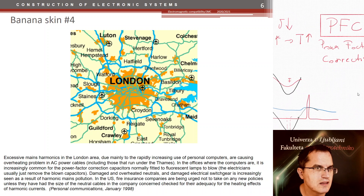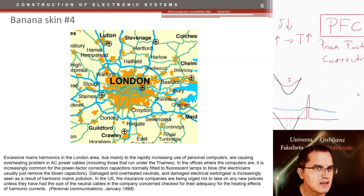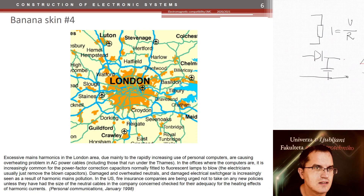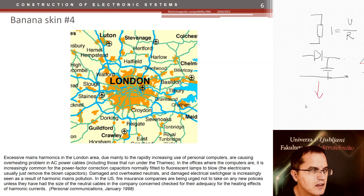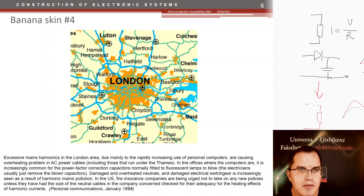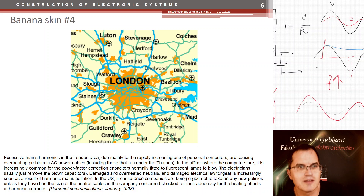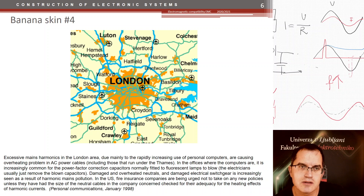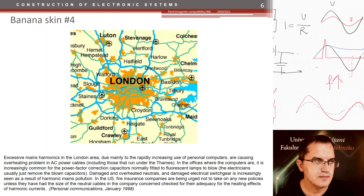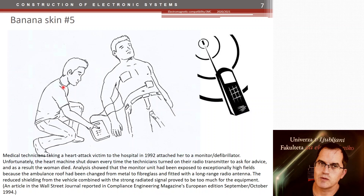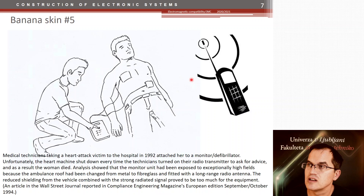The solution was introduced through regulations and EMC directives: every power supply above a certain power must have a Power Factor Correction (PFC) circuit. This circuit changes the rectifier behavior so that it draws current with the same shape as the voltage, making the load effectively resistive and eliminating the harmonic problem.